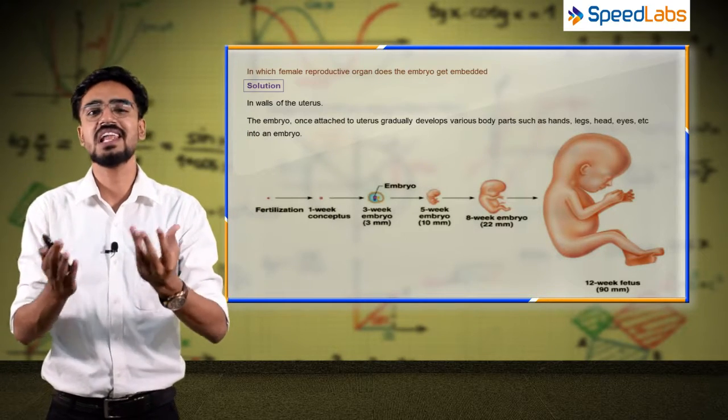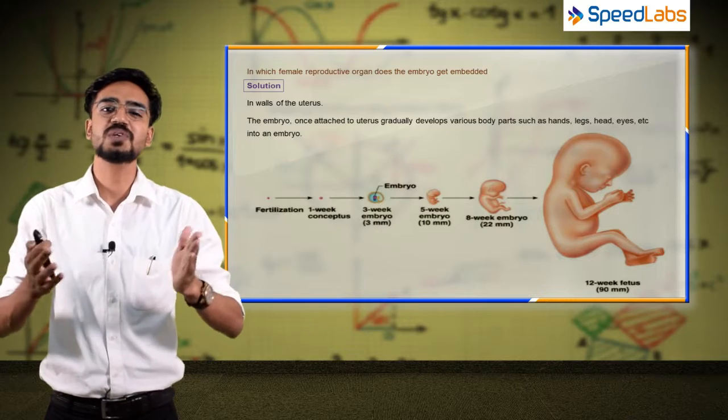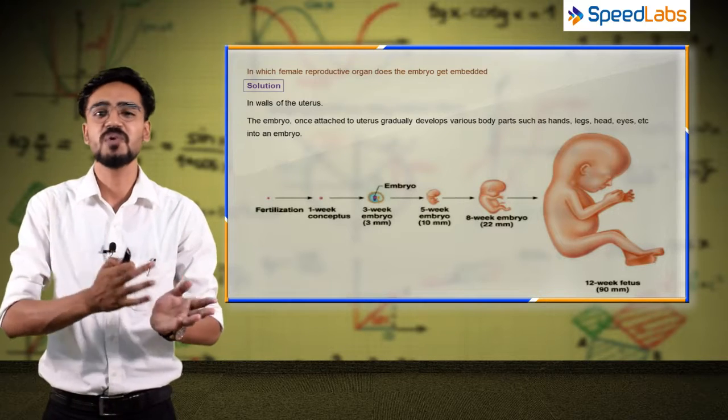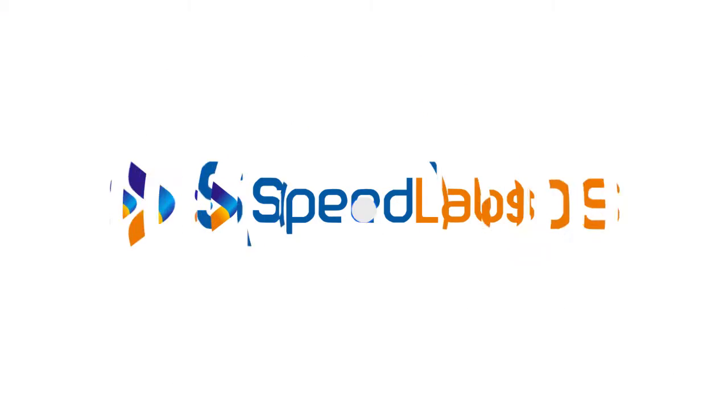So this embryo is a very beautiful part which shows how you are starting within the uterus. Your hands are small, small, and legs are moving, and there are many processes that you have.